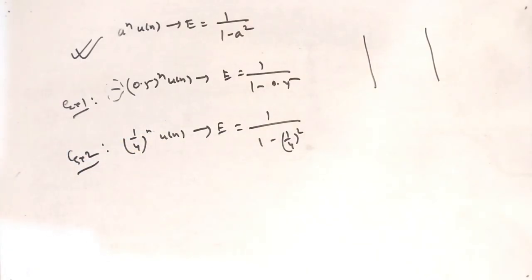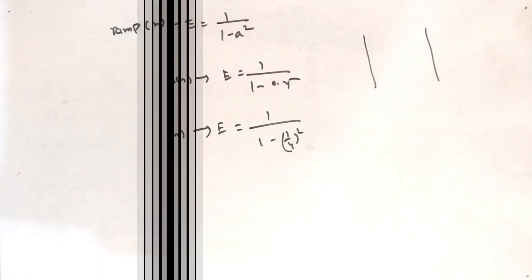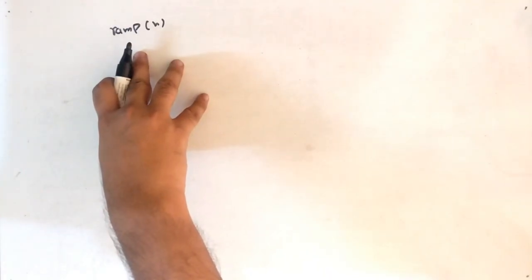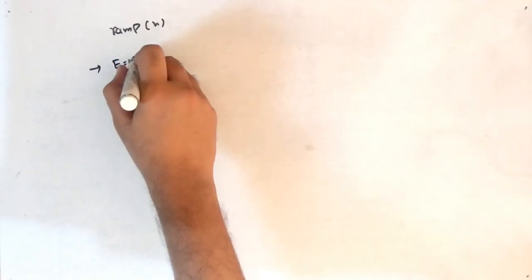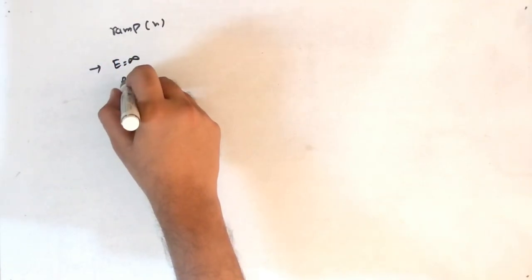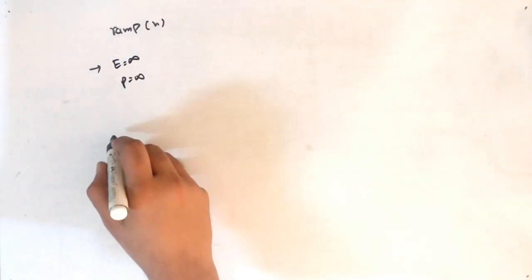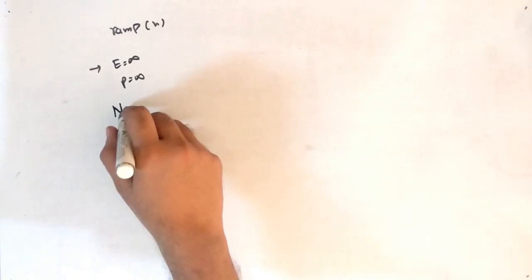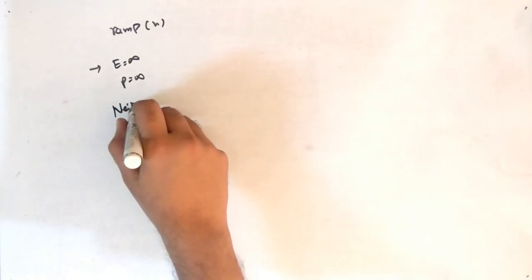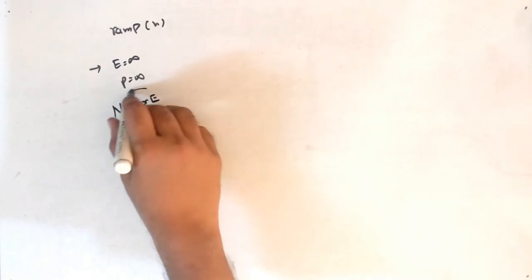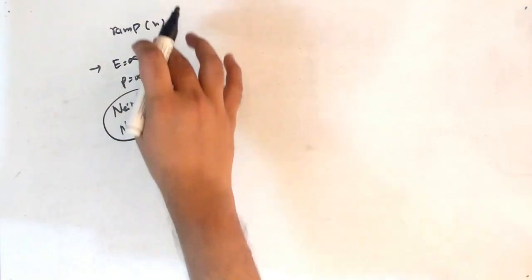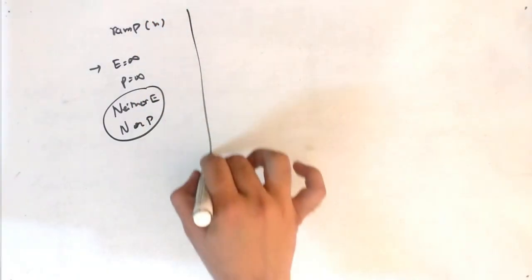Special case: ramp signal. As stated in the continuous time signal video, for a ramp, energy is infinity and power is infinity. So a ramp is neither an energy signal nor a power signal.